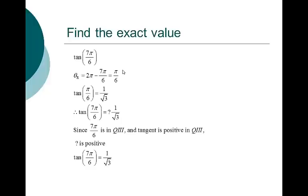After doing all these questions, hopefully you realize what I'm trying to get to: I don't want you to memorize the entire unit circle. I would like you to memorize quadrant 1 really well — the sine, cosine, and tangent of 30, 45, and 60 degrees. If you can do that, life is pretty good, because then we use reference angles to figure out sine, cosine, and tangent no matter which quadrant we're in.